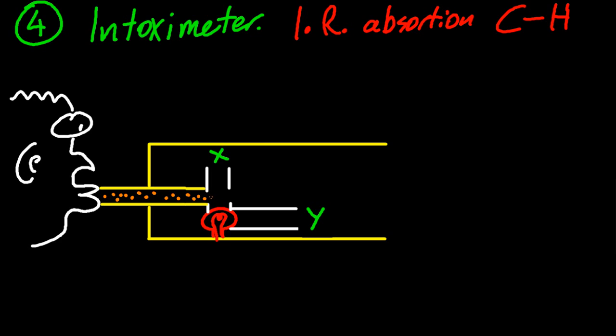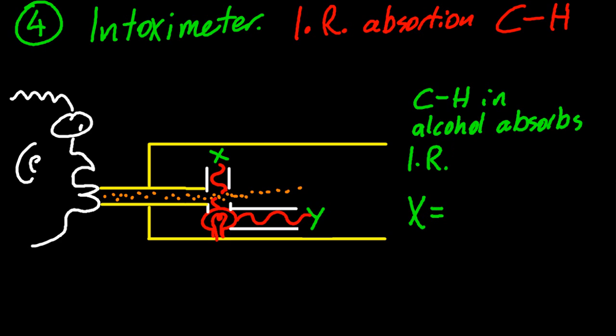So infrared light of a certain wavelength will be absorbed by the carbon-hydrogen bond in alcohol. So if I breathe through there, through the machine, what the machine's going to do is it's going to compare the light that hits Y with the light that hits X. Now the carbon-hydrogen bond in the alcohol absorbs some of this infrared radiation. Now if X equals Y, if the light's the same at both places, there's no alcohol in your breath. Well, you should be able to see where this is going now.